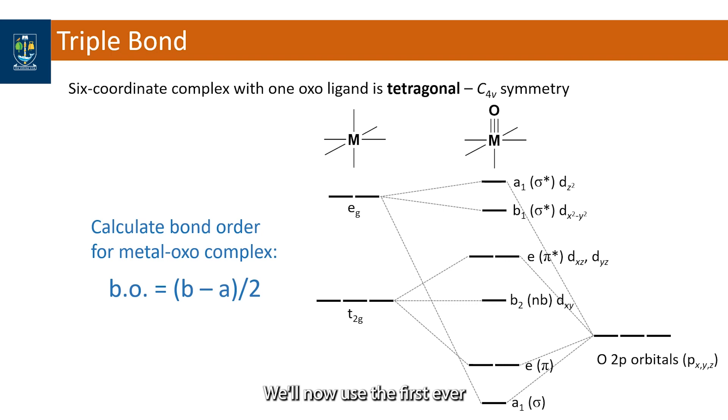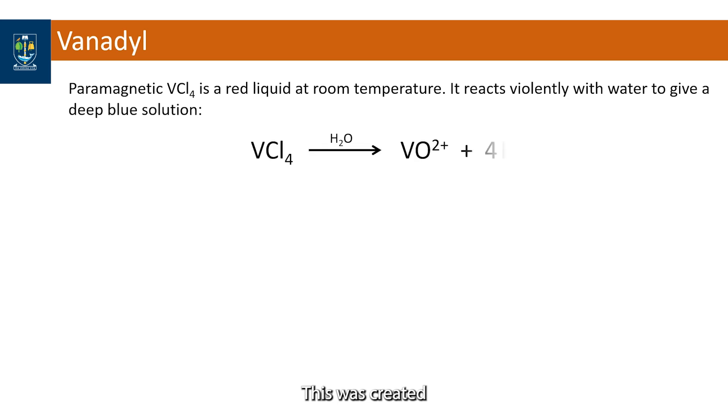We'll now use the first ever metal oxo complex as an example. This was created by taking a reactive red liquid, vanadium tetrachloride, and putting it into water where it produces a blue solution of the VO2+ ion called vanadyl.